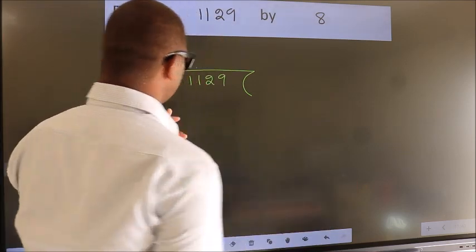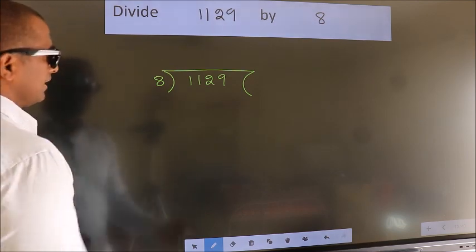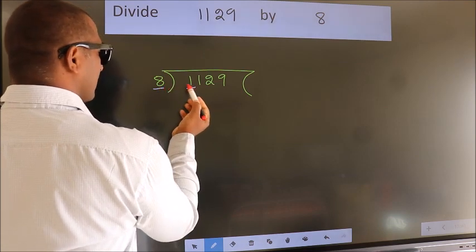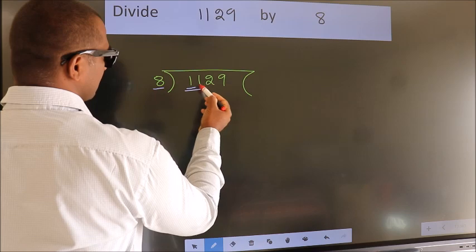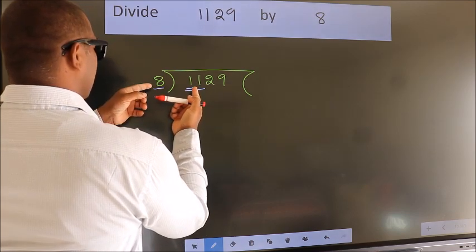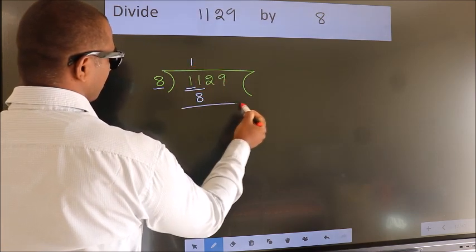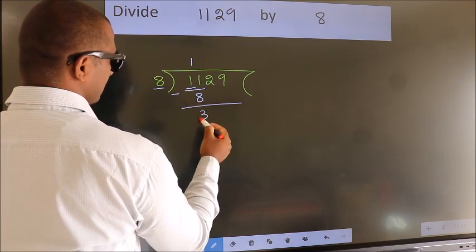This is your step 1. Next, here we have 1, here 8. 1 smaller than 8, so we should take 2 numbers, 11. A number close to 11 in 8 table is 8 once 8. Now we should subtract. We get 3.